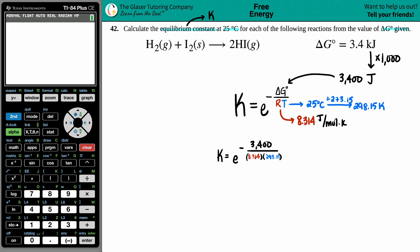I'm going to say K equals e raised to some number. Let's simplify what that number is. Negative 3400 divided by 8.314. Since I'm using no parentheses and I want to get that 298.15 in the denominator, I'm going to have to press divide again.